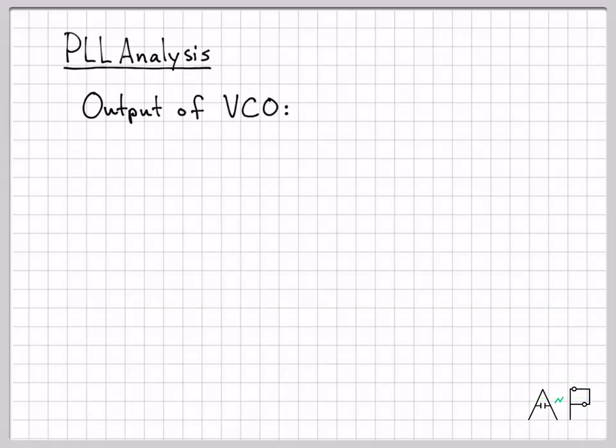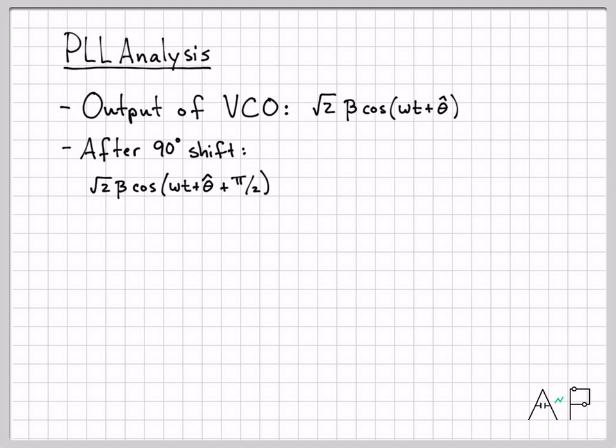All right. So what is the output of the VCO? On the previous chart, we saw that the output was root 2 beta cosine omega t plus theta hat. So omega is the frequency, it's fixed. And theta hat is the phase of the VCO that's currently being generated. The output of the VCO comes around that bottom feedback loop and it goes through a 90 degree phase shifter. So if we take root 2 beta cosine omega t plus theta hat and shift it 90 degrees, that changes the argument of the cosine by plus pi over 2. And then if I use a little trig identity, we can easily write that instead of cosine shifted by pi over 2, that's really the negative of sine, but take off the pi over 2.